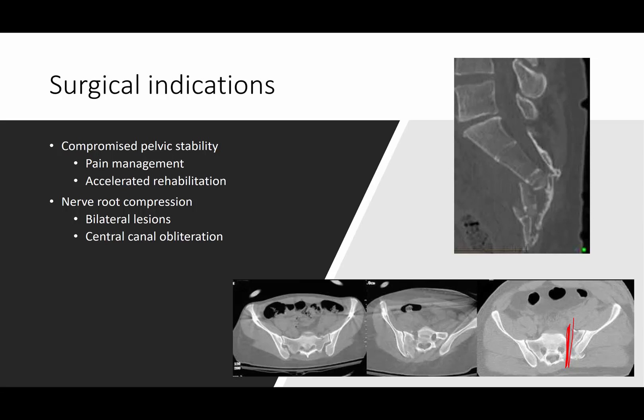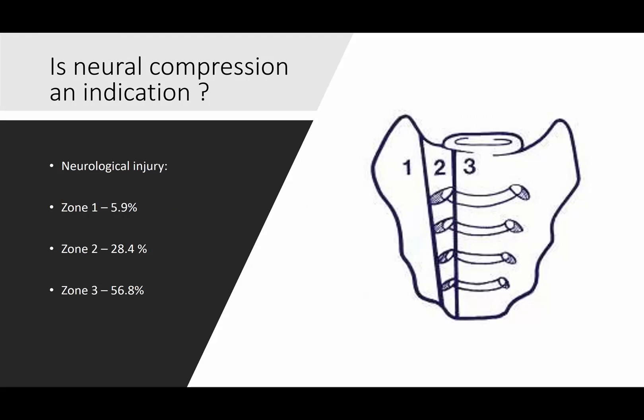Then there's the question of when surgery is needed for nerve root compression. In a Roy-Camille type 2 injury, the nerve roots are trying to get caught at the fracture site, with potentially bilateral nerve root injury at the S3 level and down, and the central canal is obliterated.